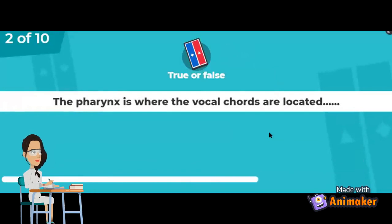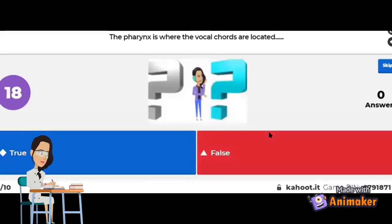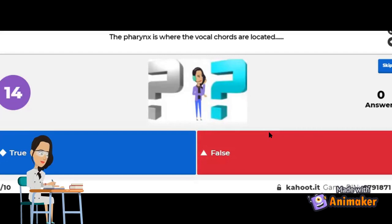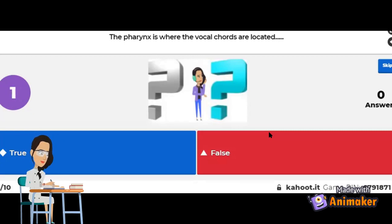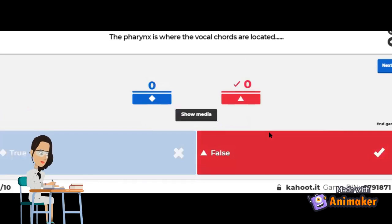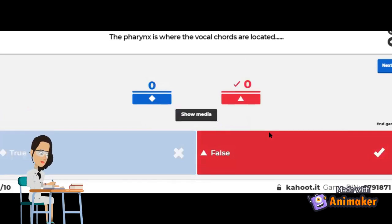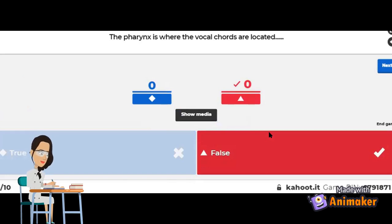Next! True or false: the pharynx is where the vocal cords are located. The correct answer is false. The larynx is where the vocal cords are located, not the pharynx. If you got false, you are correct.